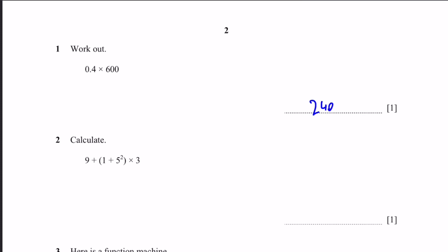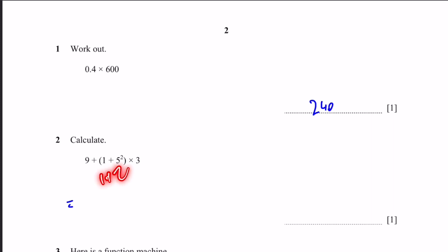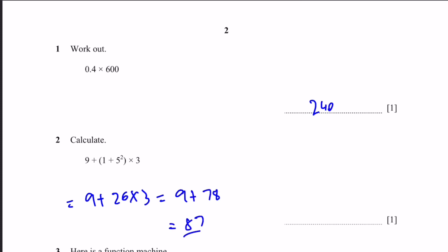Question 2. Calculate 9 plus the quantity 1 plus 5 squared, multiplied by 3. First, 1 plus 5 squared is 1 plus 25, which is 26. Then 9 plus 26 multiplied by 3. We do multiplication first, so 26 times 3 is 78, giving a total of 87.